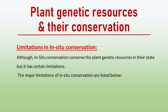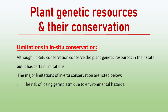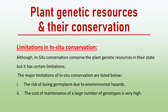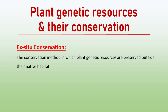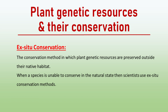The major limitations are the risk of losing germplasm due to environmental hazards, and the cost of maintenance of a large number of genotypes is very high. The second major approach for conservation of plant genetic resources is ex situ conservation. It is the conservation method in which plant genetic resources are preserved outside the native habitat. When a species is unable to be conserved in the natural state, scientists use ex situ conservation methods.